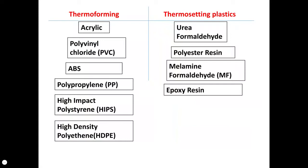On the other side are thermosetting plastics. The vast majority of plastics you see in the world are thermoforming plastics. The thermosetting plastics you need to know are urea formaldehyde, polyester resin, melamine formaldehyde — used for kitchen worktops — and epoxy resin. Epoxy resin can be used as an adhesive or glue; the brand name Araldite is one example. It comes in a resin and a hardener that, when mixed together, will set into a solid polymer which then cannot be remelted again.